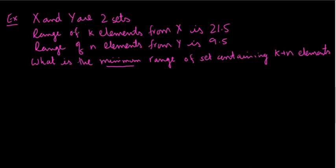X and Y are two sets of numbers. Range of K elements from X is 21.5. Range of N elements from Y is 9.5. Let's write this down. So K elements from X, the range is 21.5. N elements from Y, the range is 9.5. And the question is asking what is the minimum, important here, minimum range of set containing K plus N elements.